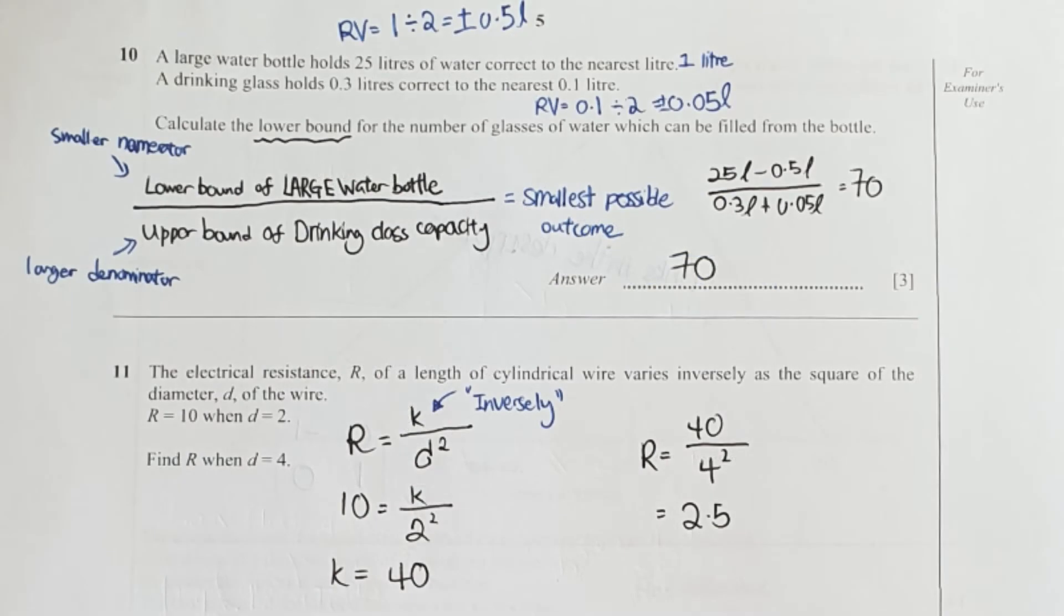For question 10, first thing first I found the rounding value. Corrected to nearest liter means it is referring to 1 liter, so 1 divided by 2, which is plus minus 0.5 liters. But for the next one, glass holding 0.3 liters corrected to nearest 0.1, so I took 0.1 divided by 2, I get plus minus 0.05.